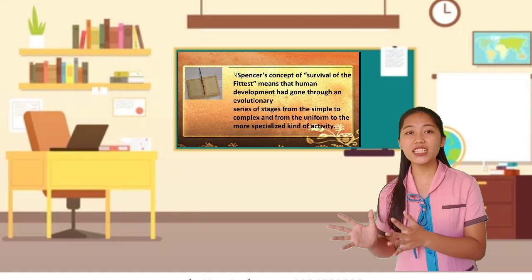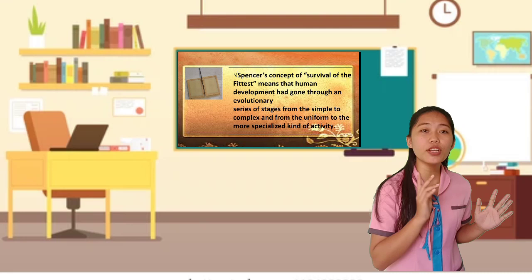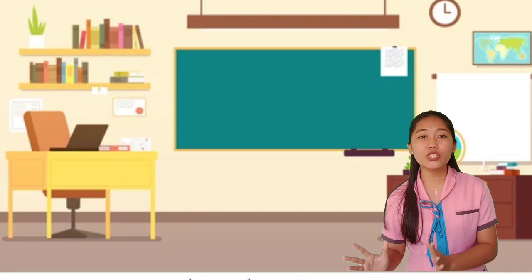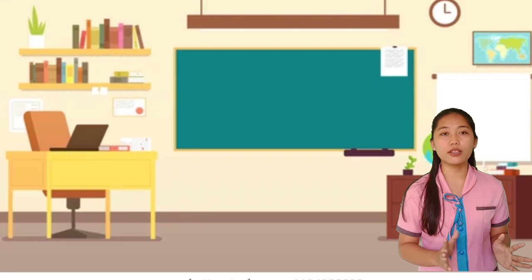Spencer's concept of survival of the fittest means that human development had gone through an evolutionary series of stages from the simple to complex and from the uniform to more specialized kind of activity. Social development had taken place according to an evolutionary process by which simple homogeneous societies had evolved to more complex societal systems.